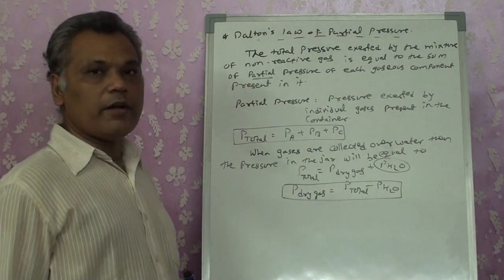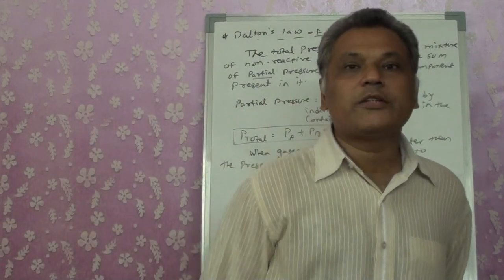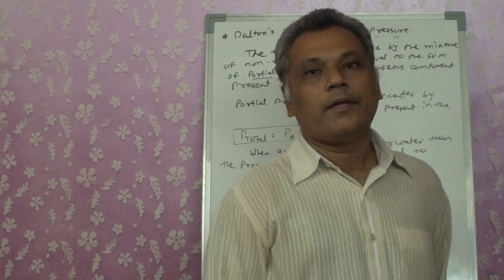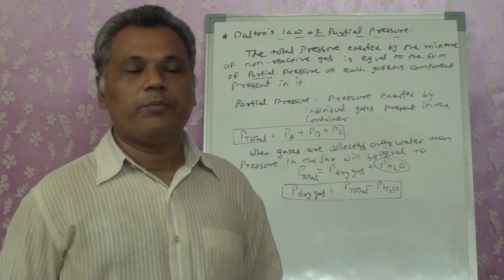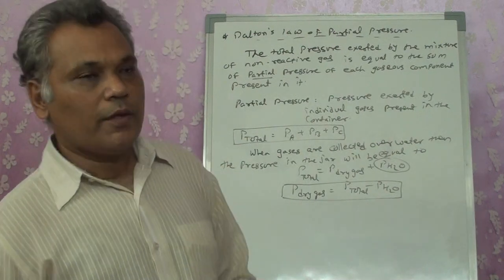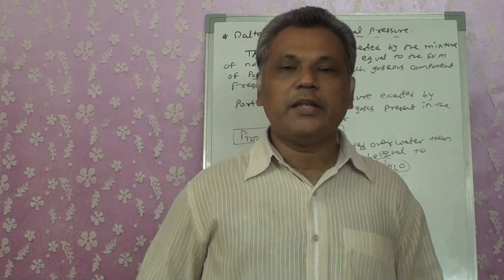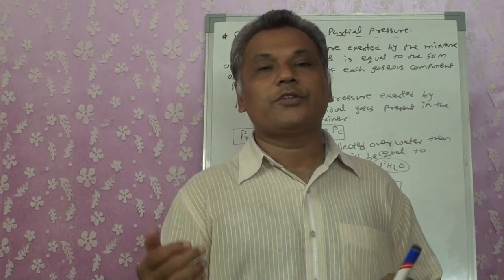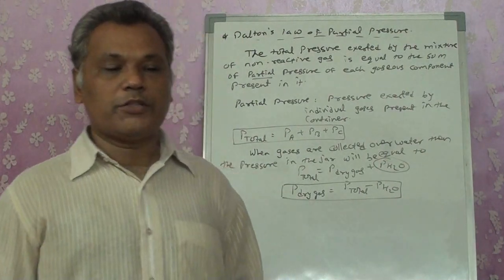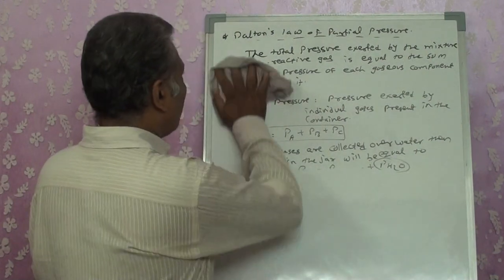Now, suppose the question arises: how do we calculate partial pressures? We can use the ideal gas equation PV = nRT to calculate partial pressure. But if the number of moles, pressure, temperature, or volume are not all given, we need to derive another formula.